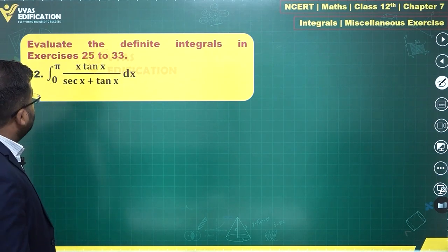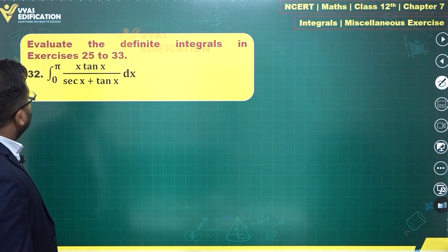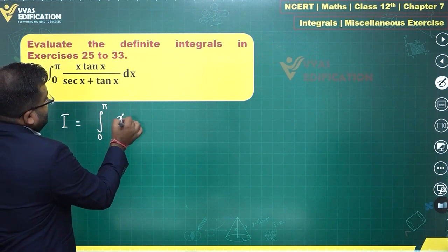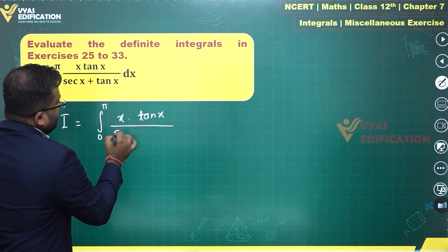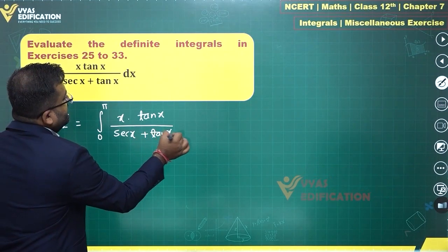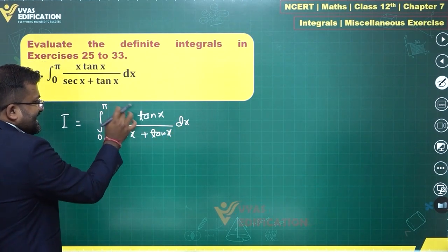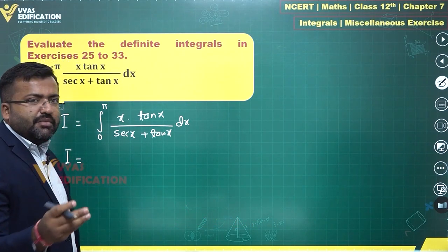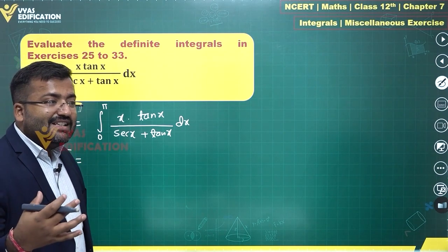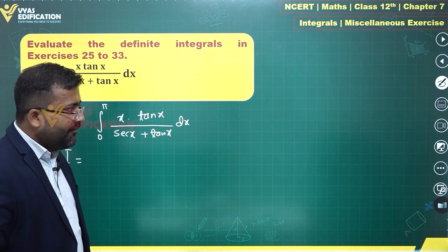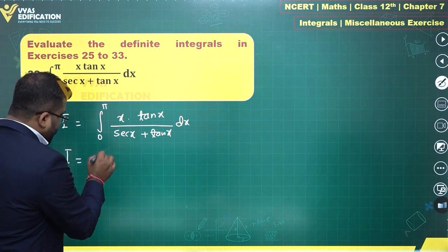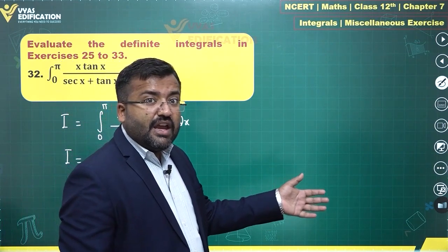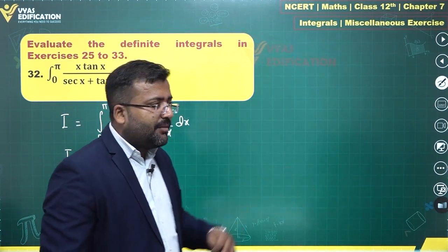Let's define I as the integral from 0 to π of x·tan x divided by (sec x + tan x) dx. The important thing is this x has to be sorted out first, and for that we apply the king property — property P4 — which states that the integral from a to b of f(x) dx equals the integral from a to b of f(a + b - x) dx.